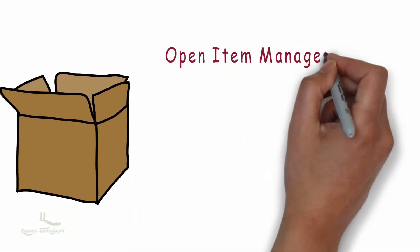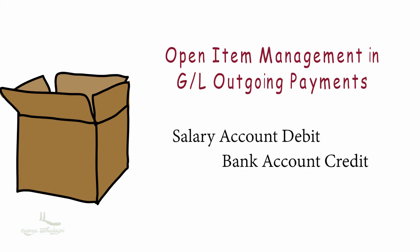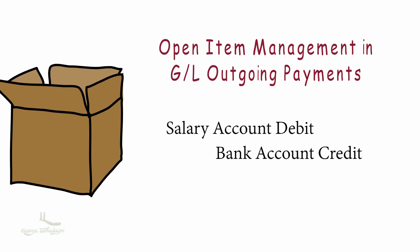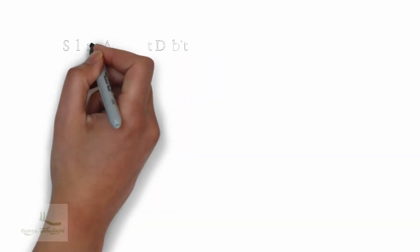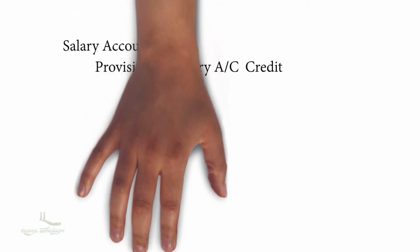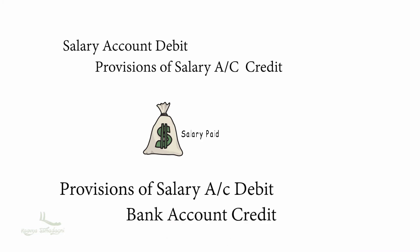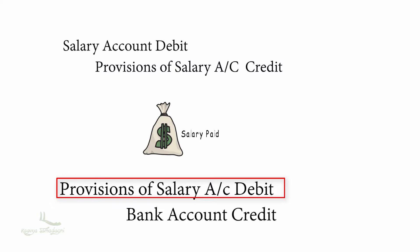Let's take the first scenario: open item management in GL outgoing payments, meaning payment is going out. As a learning activity, let's take the example transaction of salary account debit and bank account credit. We involve a provisional account, so the first journal entry will be salary account debit to provisions of salary account credit. When the actual salary happens, the second journal entry will be provisions of salary account debit to bank account.